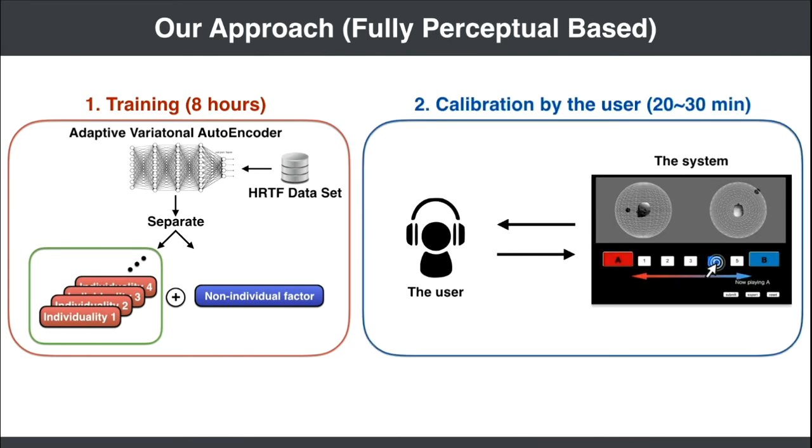At the calibration phase, the system shows test signals generated from the HRTF generator, and the user provides feedbacks according to the perceptual direction. Using this feedback information, the system optimizes any HRTF for the user.